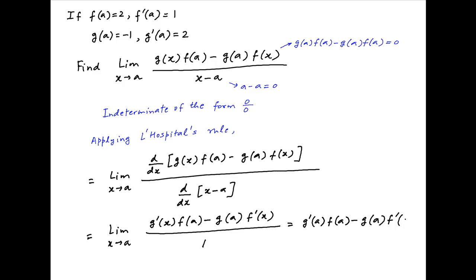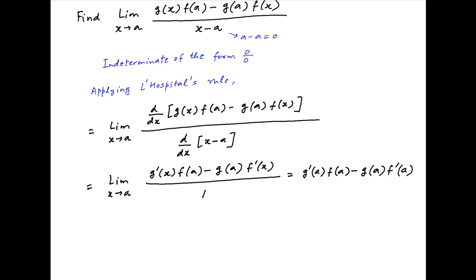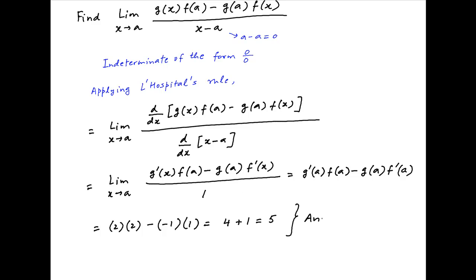Now we are given the values of f(a), f'(a), g(a), and g'(a). Plugging these in, the value of the given limit is equal to 2 times 2 minus (minus 1) times 1, which is equal to 4 plus 1, or 5, which is the required answer.